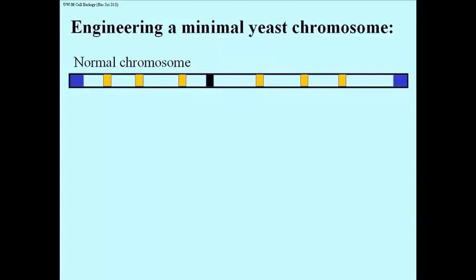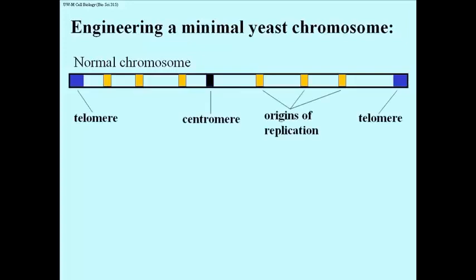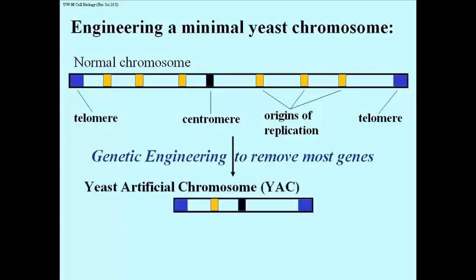Here we have cartooned one of a yeast cell's normal chromosomes, showing several components. I've used orange to indicate the origins of replication. The ends are the telomeres, colored blue, and in the middle I've made a centromere in black. You may recall that telomeres are in fact specific sequences found only at the ends of chromosomes, enabling them to replicate properly. We will cover these features in more detail when we discuss replication, but for now remember these components of any typical chromosome. In a genetic engineering laboratory, a yeast chromosome was engineered to remove most of its genes.